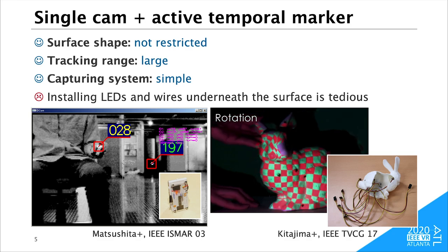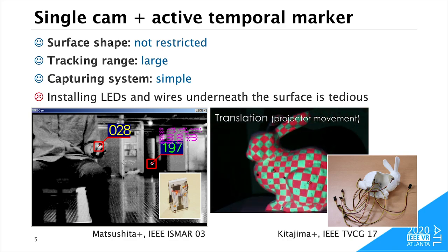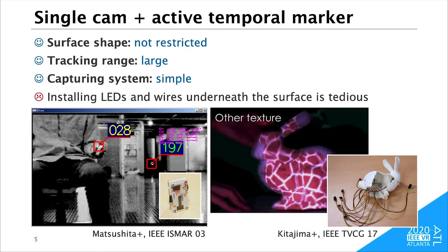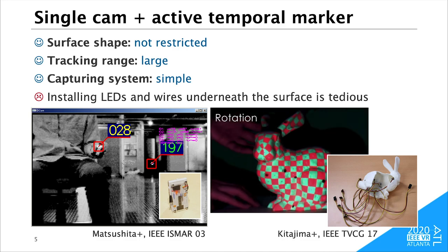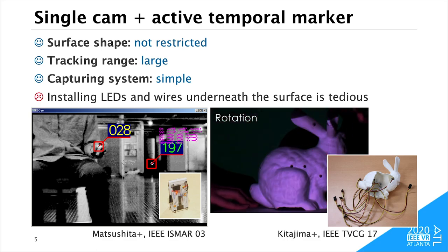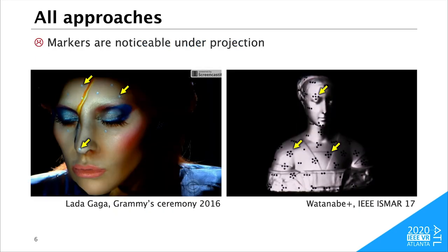The trade-off of the spatial markers can be solved by applying an active marker. Active markers emit a temporal blinking pattern of infrared light to represent the marker ID. A naive implementation would be to embed LEDs in a projection object at all the marker positions. However, installing multiple LEDs and wires under the surface is tedious. And there is a unique issue of projection mapping. Markers shouldn't be noticeable to human observers when the surface is projected. The noticeable markers significantly degrade the projection mapping image quality.